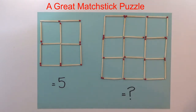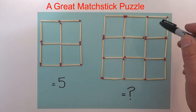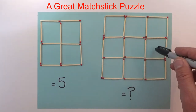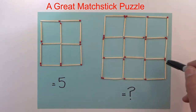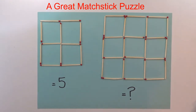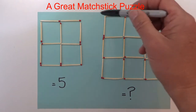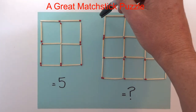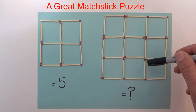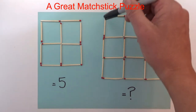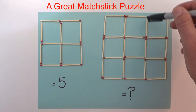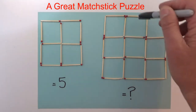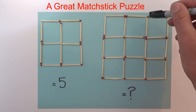If we apply the same principle to the right-hand group, we can see that we've got one, two, three, four, five, six, seven, eight, and nine small one-by-one matchstick squares. But we've also got a number of two-by-two matchstick squares. Starting in the top-left corner, going across two, down two, back across two, and up two — you can see that creates a two-by-two square.